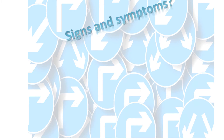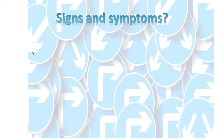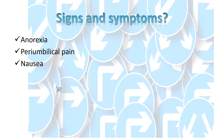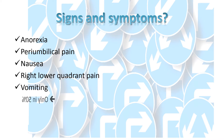The signs and symptoms are very inconsistent. The classical case of appendicitis includes anorexia, periumbilical pain followed by nausea, right lower quadrant pain and vomiting. But this classical story only occurs in 50% of cases. Diarrhea or constipation only occur in 18% of patients.